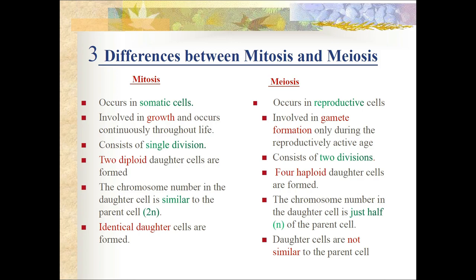Differences between mitosis and meiosis: mitosis occurs in somatic cells whereas meiosis occurs in reproductive cells. Mitosis is involved in growth and occurs continuously throughout life, whereas meiosis is involved only in gamete formation during the reproductive stage. Mitosis consists of a single division whereas meiosis consists of two divisions. Mitosis produces two diploid daughter cells (2N) identical to the parent, whereas meiosis produces four haploid daughter cells (N) that are not identical to the parent.